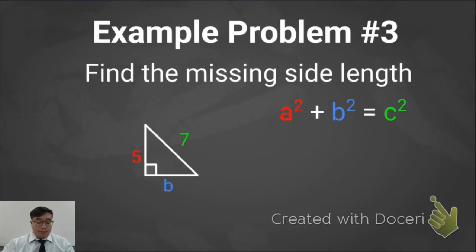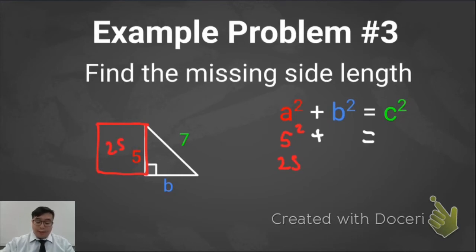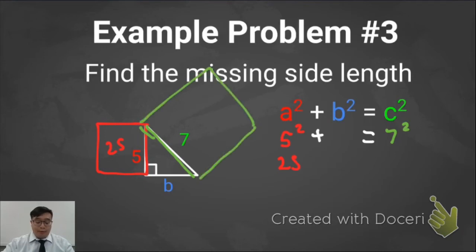Let's go over our third practice problem. In this problem, instead of having side C missing, I have side B missing. We're going to start the same way by comparing the squares off the sides. Side A has a length of 5, and 5 times 5, or 5 squared, is going to be 25. Side C has a length of 7, and 7 squared, or 7 times 7, is going to be 49.